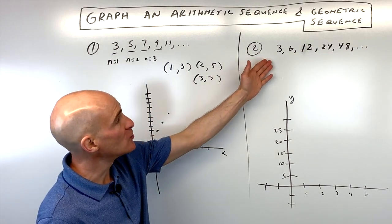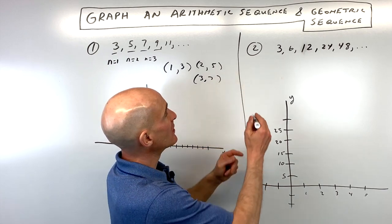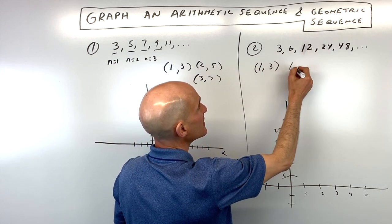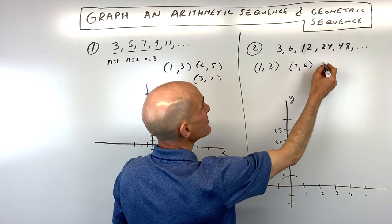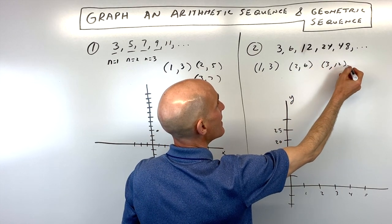Now with geometric, we can do the same thing. This is going to be like our first term, so 1, 3, our second term is going to be 2, 6, our third term is 3, 12, etc.